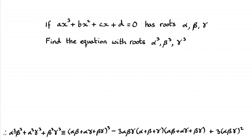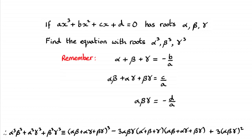The sum of the cubes of the pairs of those roots. We can use this identity where it's got the sum of the pairs of the roots, the product of the roots and the sum of the roots in it. So we can make the substitutions that we need — that we've worked with in the past — for the sum of the roots, sum of the pairs of the roots and the product of the roots. What I want to do now is just show you, in case you're not given this identity, how we can prove it.